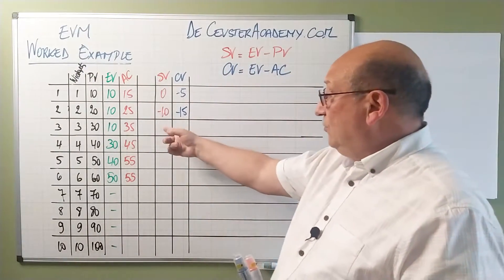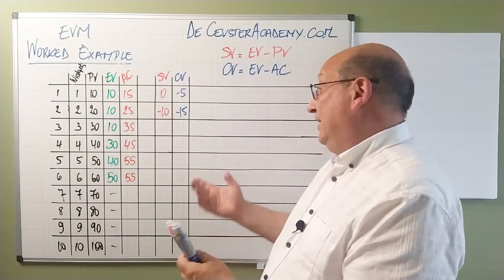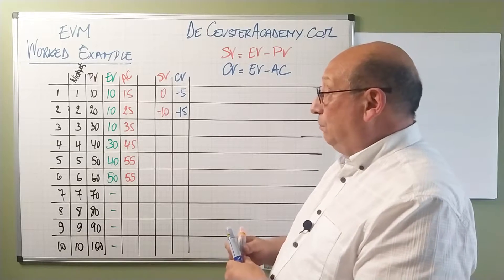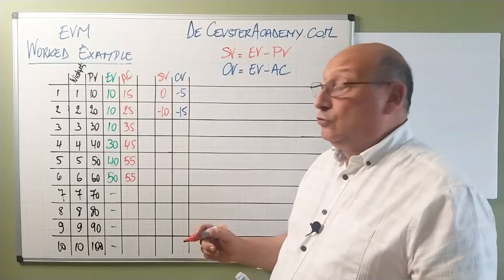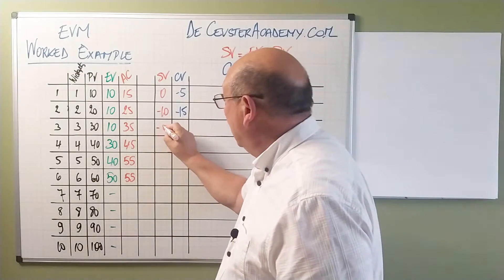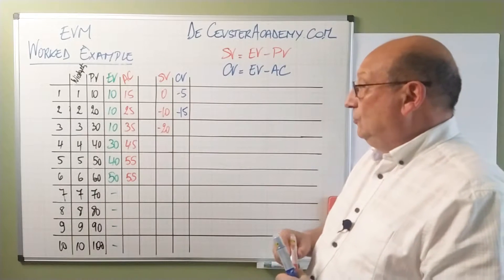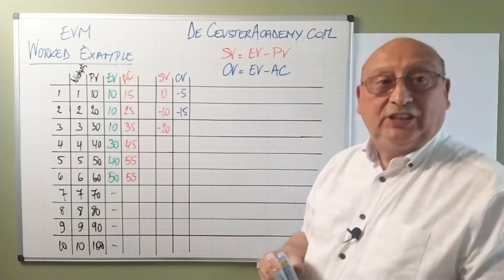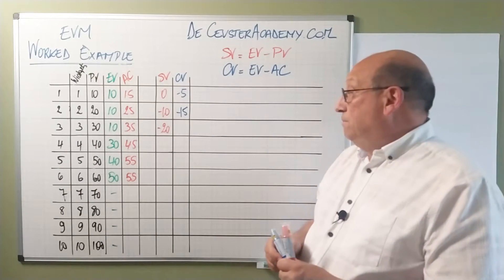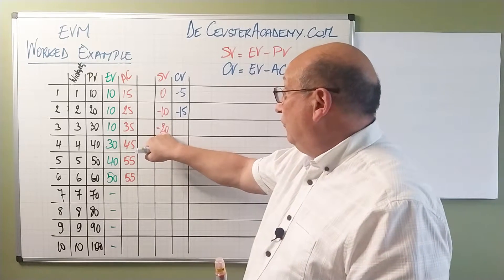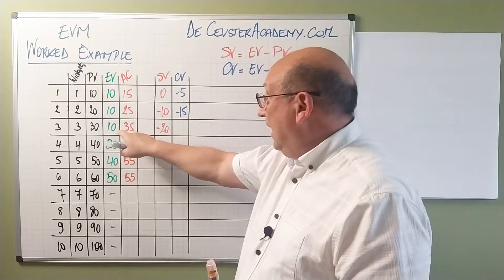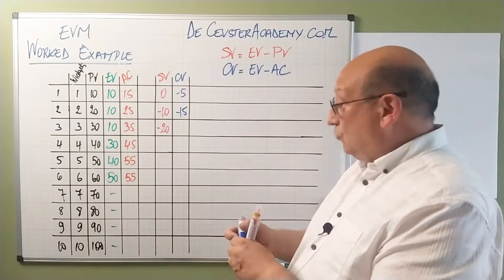Again we see that we only have one widget completed so we earned 10k. We expected to earn 30 so I am at minus 20 and the cost variance is minus 20 that I have for the schedule variance. I have here minus 25.